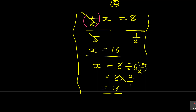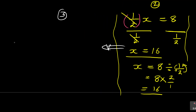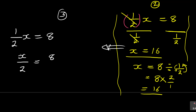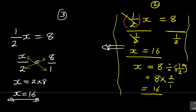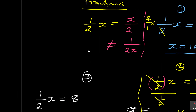Method number three: given 1/(2x) = 8, I recognize that this is the same as x/2 = 8. Since it's a fraction on the left, I write a fraction on the right and use cross multiplication — this multiplies that, and that multiplies this. So x × 1 = x, and 2 × 8 = 16, giving x = 16.